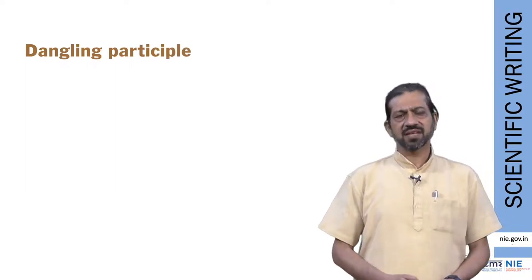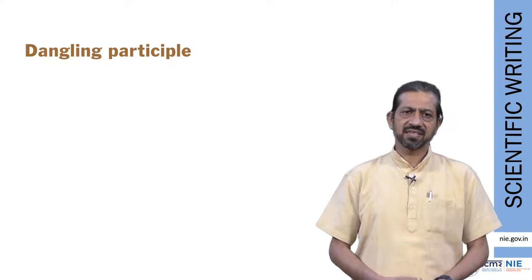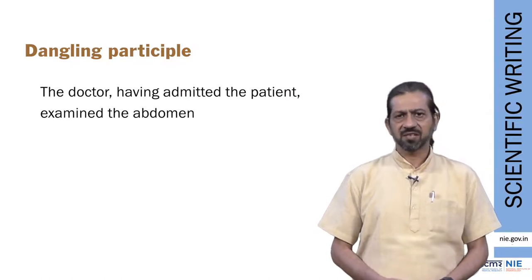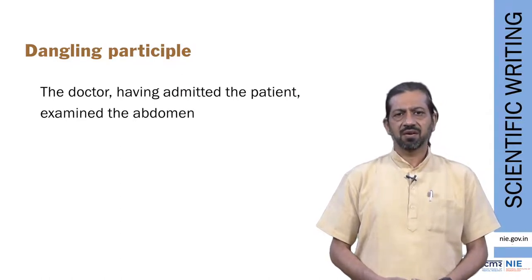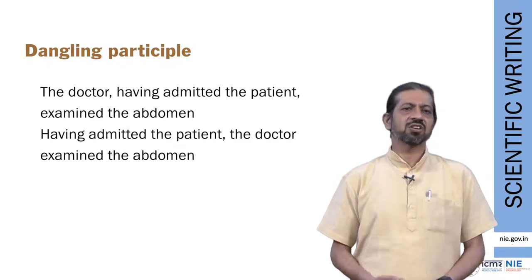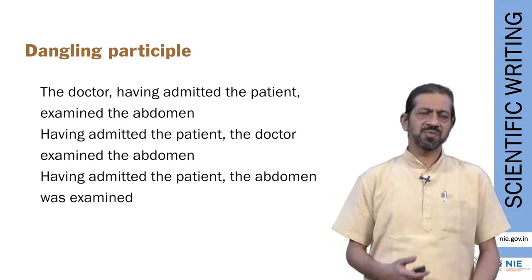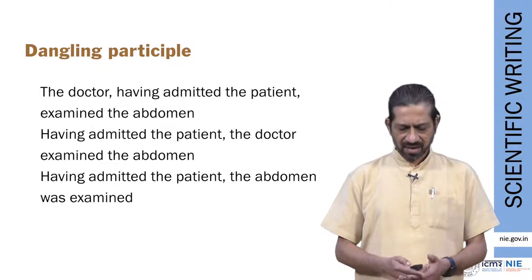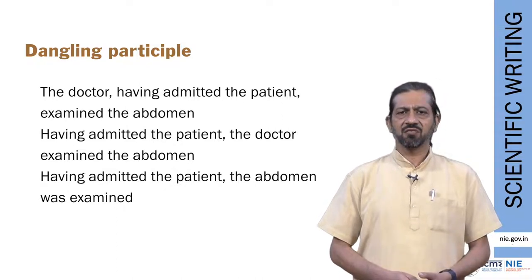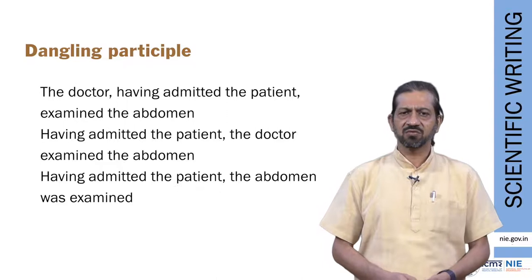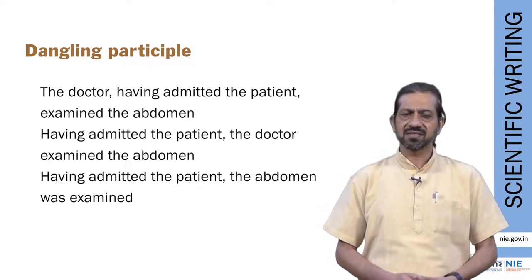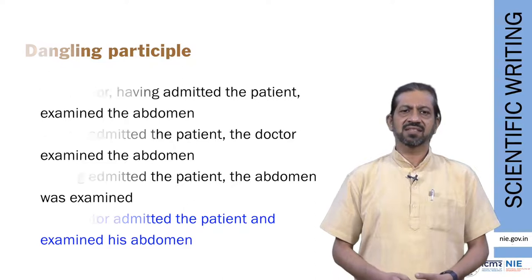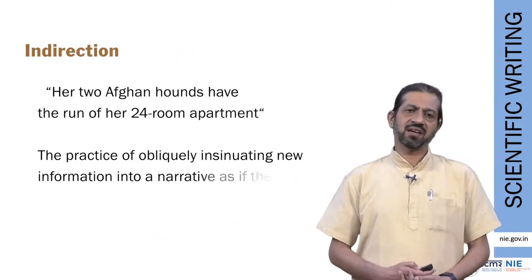A common mistake is the use of dangling participles in sentences, such as 'having admitted the patient, the abdomen was examined.' Here, 'having admitted the patient' is the dangling participle, which leaves room for vagueness and makes the sentence more complex. This could be written more simply as: 'the doctor admitted the patient and examined his abdomen.'